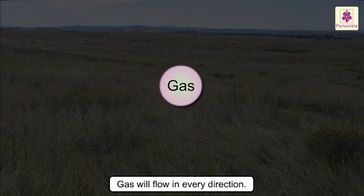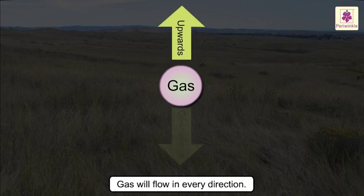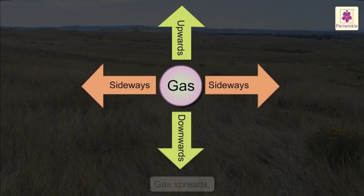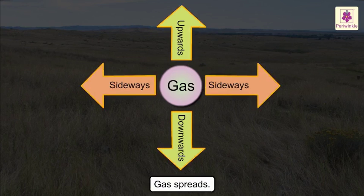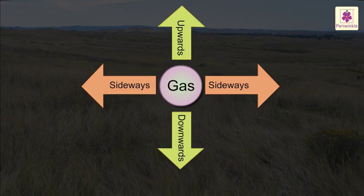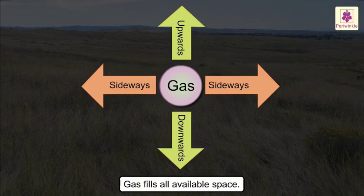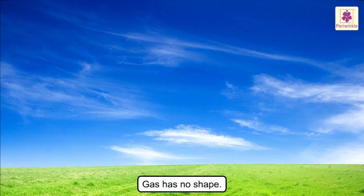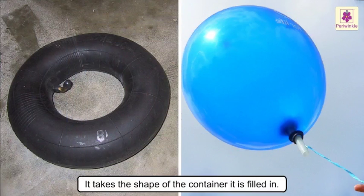Gas will flow in every direction — upwards, downwards, and sideways too. That is why we say that gas spreads and fills all available space. Most gases cannot be seen, but at times can be smelt. Like liquids, gas too has no shape; it takes the shape of the container it is filled in.